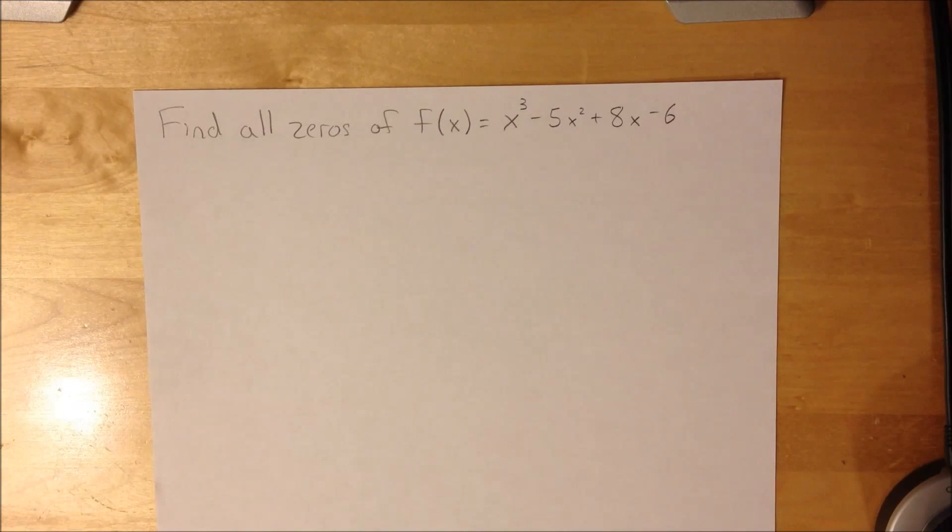Alright, so this is how to find all the zeros of f(x) = x³ - 5x² + 8x - 6.